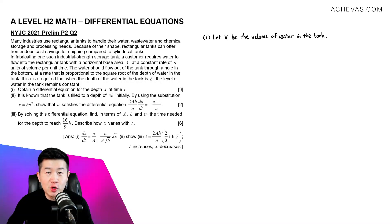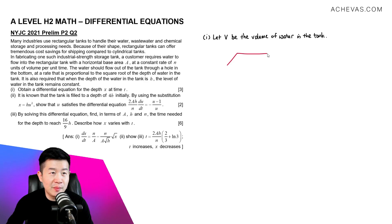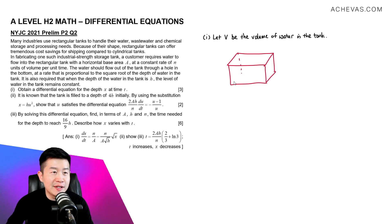We are going to let V be the volume of the water in the tank, and we are talking about a rectangular tank. Let me just do a quick sketch of this rectangular tank. According to the question, this rectangular tank has a base area of A, and water is going to be poured into the tank.